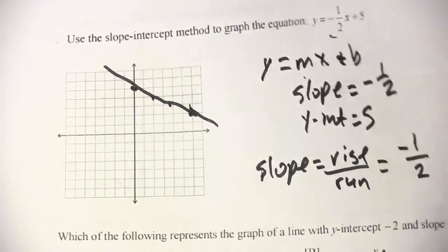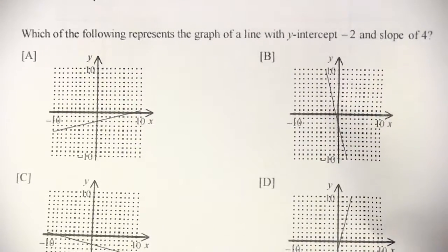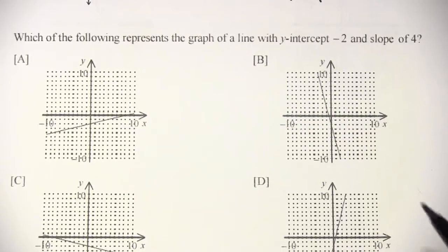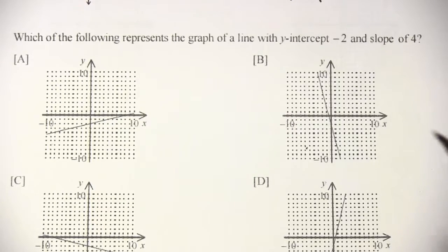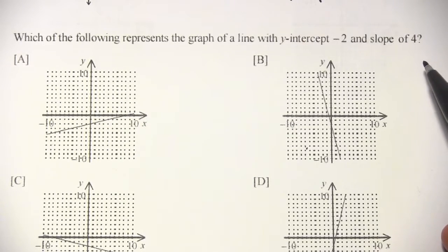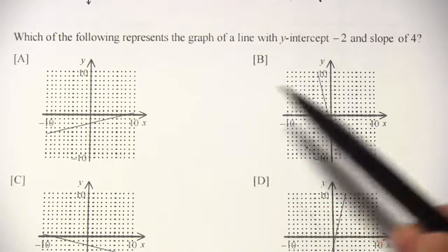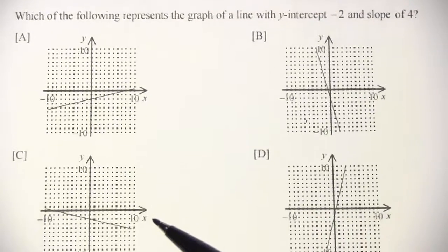Let's try one more. Alright, so this one says, which of the following represents the graph of a line with a y-intercept of negative 2 and a slope of 4? Well, let's look at the y-intercepts. They all seem to be down at negative 2, so that's not actually helping us very much.